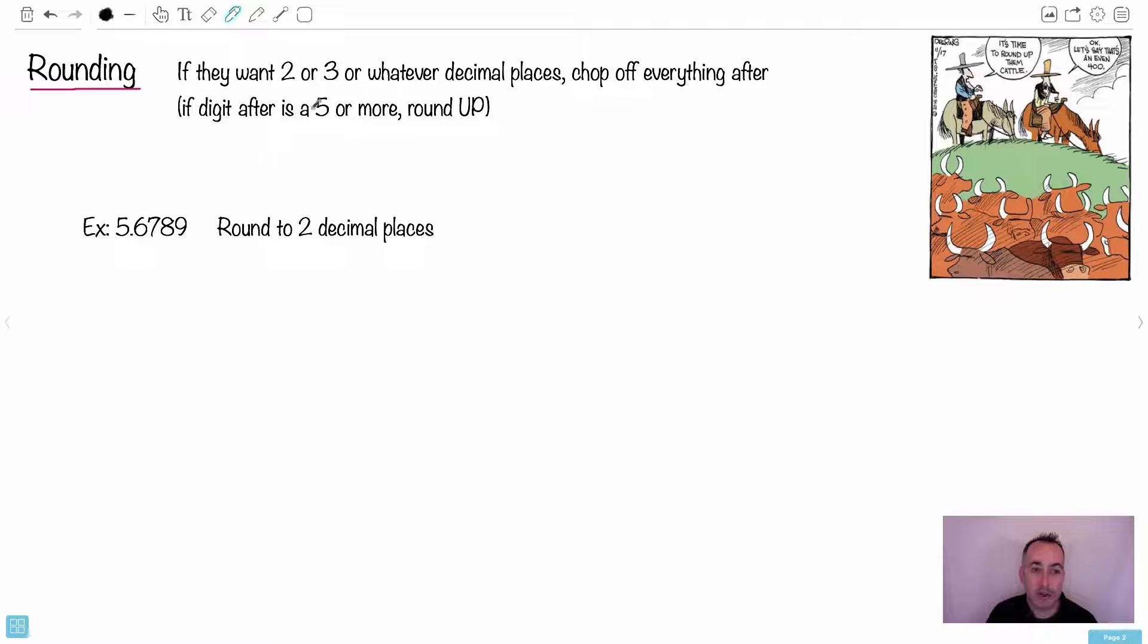Remember the trick though, that if the number afterwards, after it is a five or higher, then you should round up. And if it's like zero through four, then you should leave it. And what does that mean? I mean, most people know this, but just to be absolutely sure that you remember how to do this. Let's say we have an example like this, 5.6789 and we're supposed to round it to two decimal places. What does that mean?